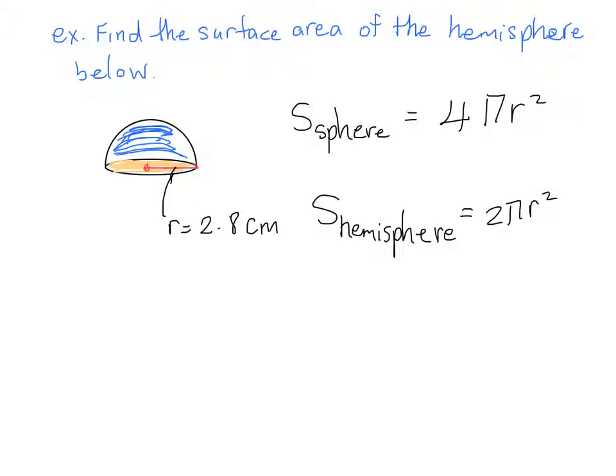However, that is not the entire surface area because there is a circular base. Now, since the circular base is, well, of course it's a circle, the area of a circle is πr². So we actually have to add that πr². So the area of this hemisphere is, in fact, not 2πr², not 4πr², but 3πr².